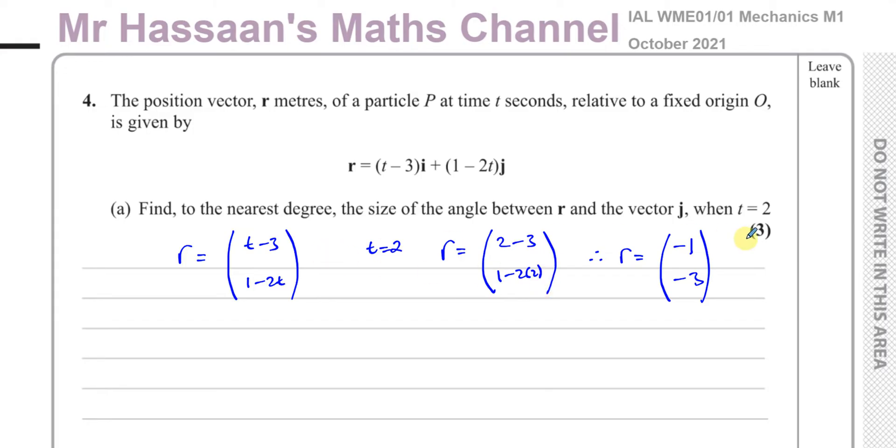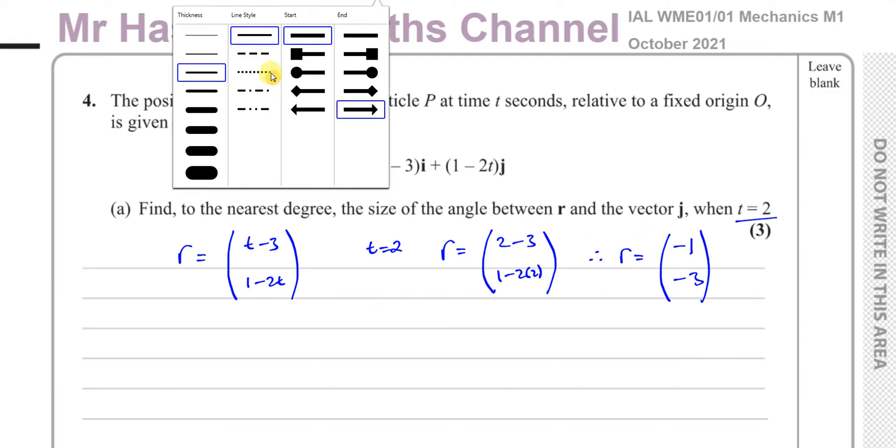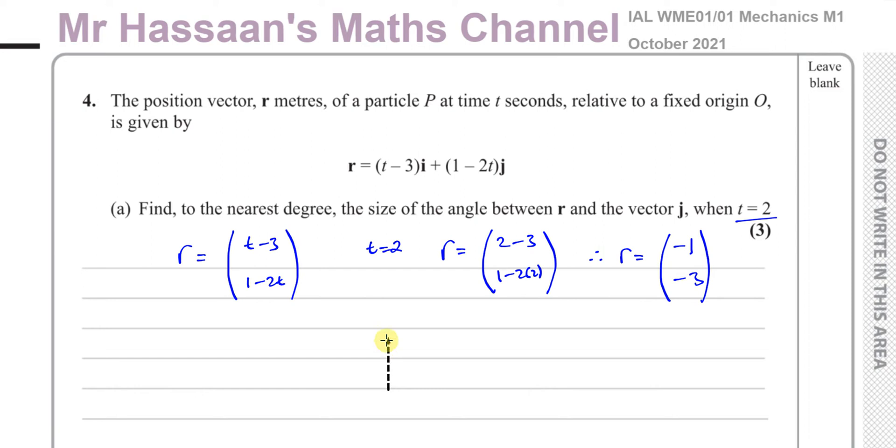Now we want to find the angle between r and the vector j. Now the vector j is a unit vector going in the direction of north. It's one unit long going up that way. And our vector is the vector negative 1, negative 3, so our vector will look something like this.